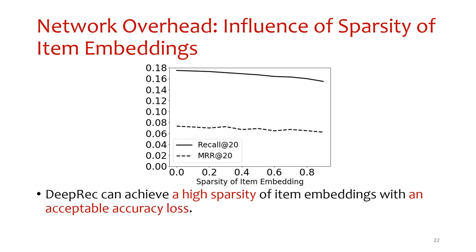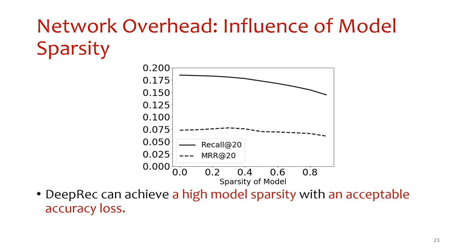There are two parts of network overhead between the cloud and device: downloading the item candidate set and downloading the global module. To measure how sparsity of item embeddings affects accuracy, we scale target sparsity from 0 to 90%. As sparsity increases, accuracy drops slowly, encouraging us to choose an aggressive embedding sparsity of 90%. Similarly, as global module sparsity increases, accuracy also drops slowly, encouraging a module sparsity of 80% to reduce network overhead.